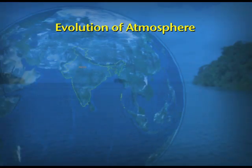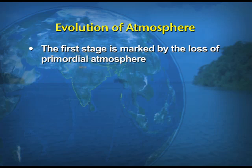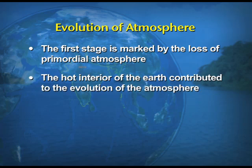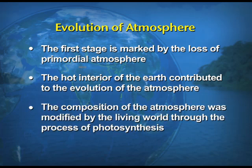We can also talk about the evolution of the atmosphere. There are three stages in the evolution of the present atmosphere. The first stage is marked by the loss of the primordial atmosphere. The second stage — the hot interior of the Earth contributed towards the evolution of the atmosphere. And finally, the composition of the atmosphere was modified by the living world through the process of photosynthesis. Overall, the Earth and its atmosphere were not the same as what we had in the initial stages when it was formed.